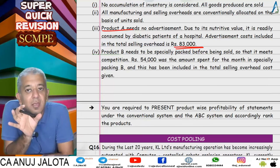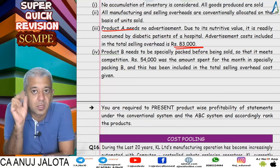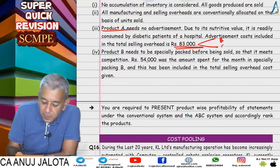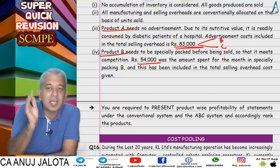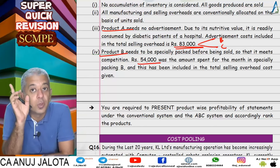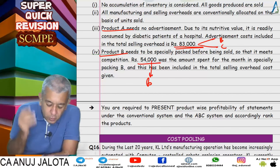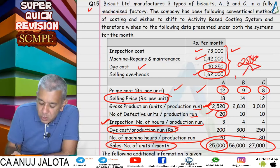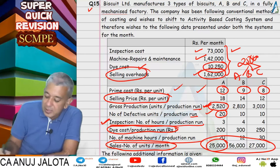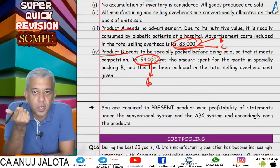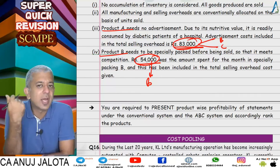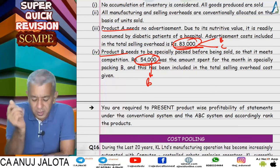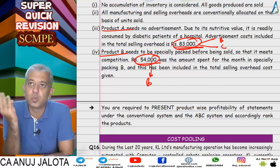For selling overheads, total was 1,62,000. Out of that, 83,000 was advertisement cost which product A does not require, so 83,000 was divided only between B and C. 54,000 was for special packing of product B and goes directly to B. Adding these two amounts, the balance of 25,000 has to be divided among A, B, and C in the ratio of quantity sold or rupee sales.